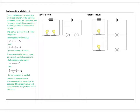The current is equal in each series component, and we need to be able to solve problems using these relationships. The potential difference is equal across each parallel component. We'll also do lab experiments investigating current, resistance, and potential difference in series and parallel circuits using various circuit elements.